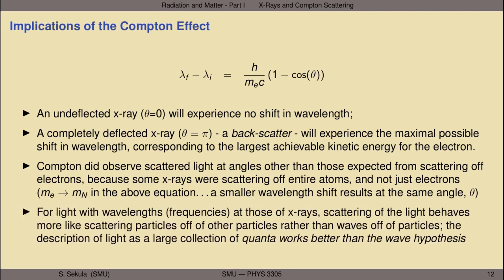This implied that for light with wavelengths at the level of x-rays, scattering of the light behaves more like scattering particles off of other particles — like bouncing tennis balls off of bowling balls — rather than waves off of particles, where waves would cause sympathetic oscillations but wouldn't change the wavelength of the original wave. This flies in the face of the purely wave hypothesis of light. Under these conditions, a better description is that light behaves as a large collection of quanta, rather than as a collection of waves.